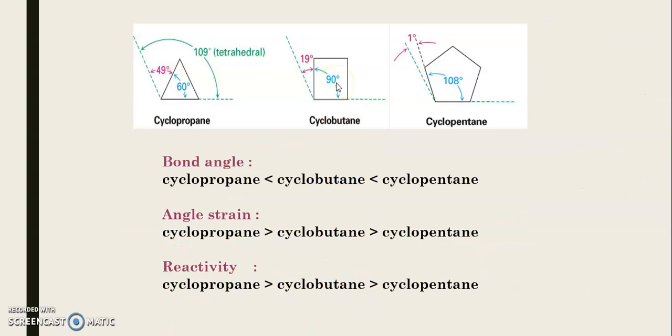On the next slide, there is a comparison between three compounds: cyclopropane, cyclobutane, and cyclopentane. The structures are shown - cyclopropane is like a triangle, cyclobutane like a square, and cyclopentane is roughly like a pentagon.